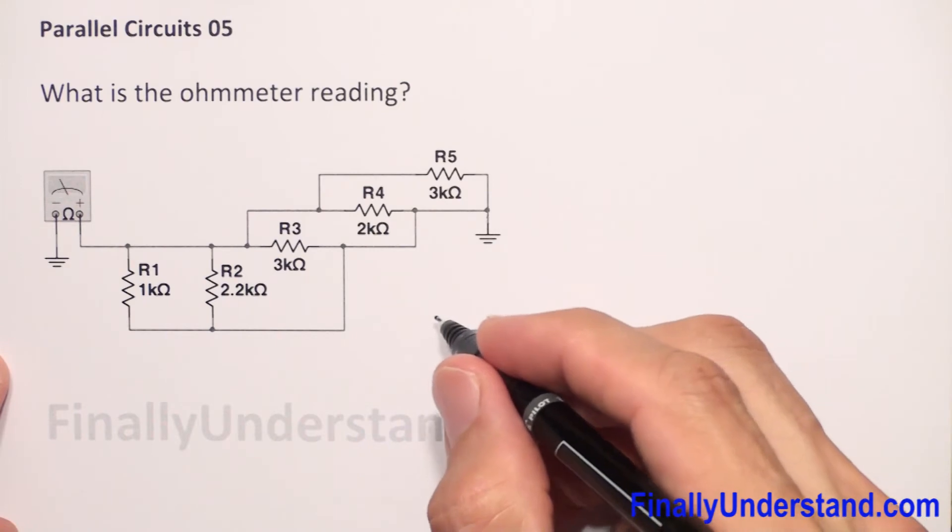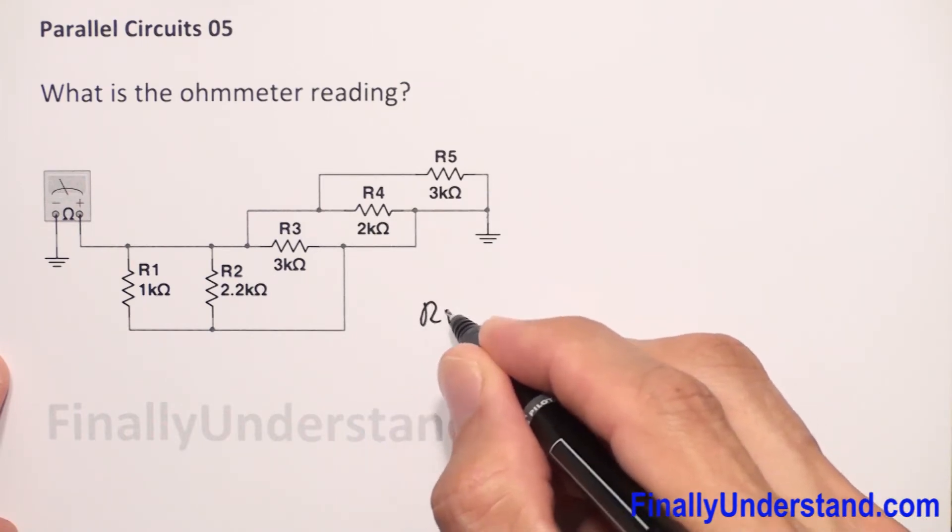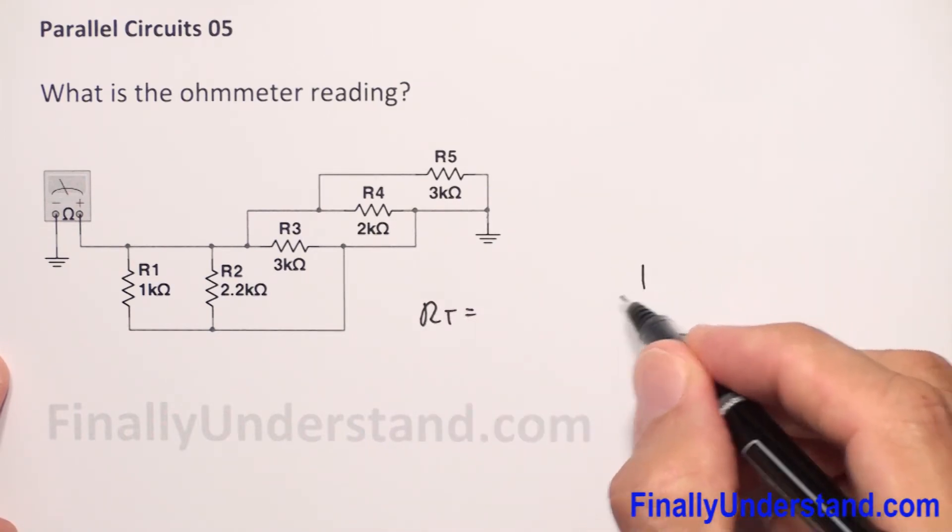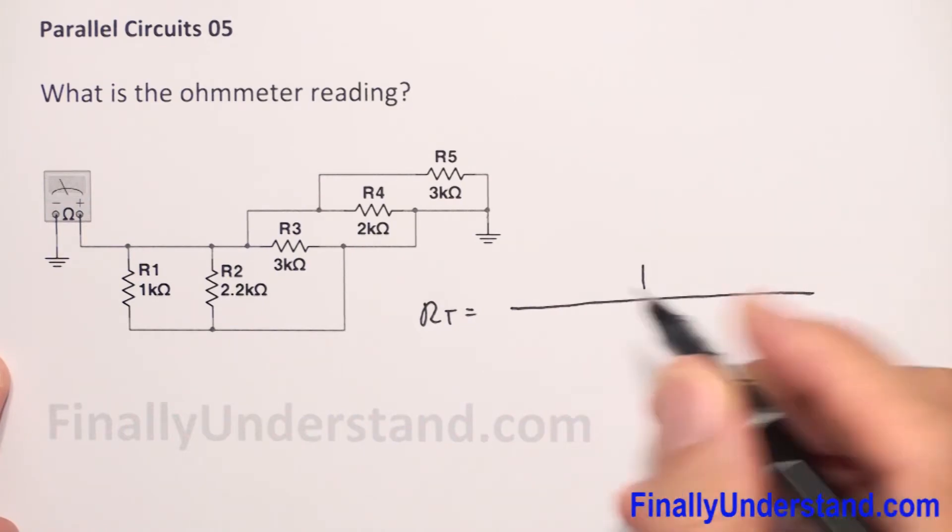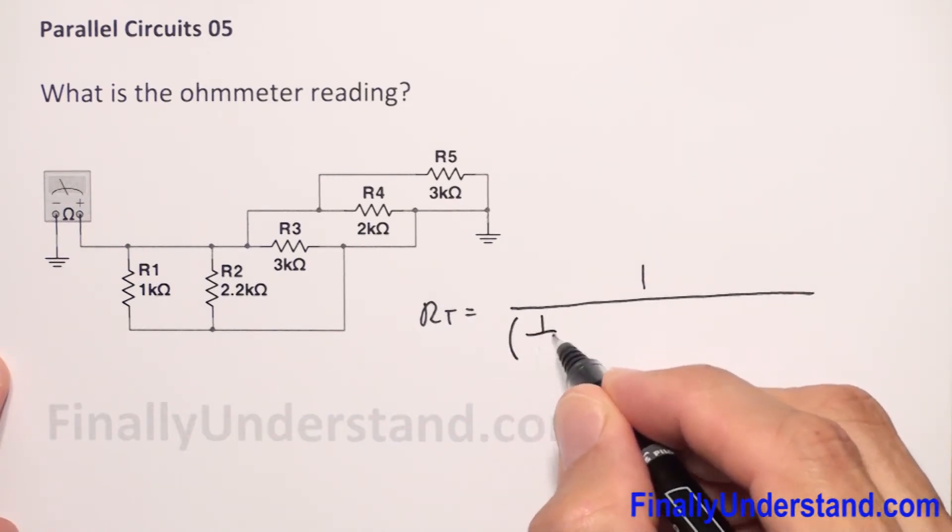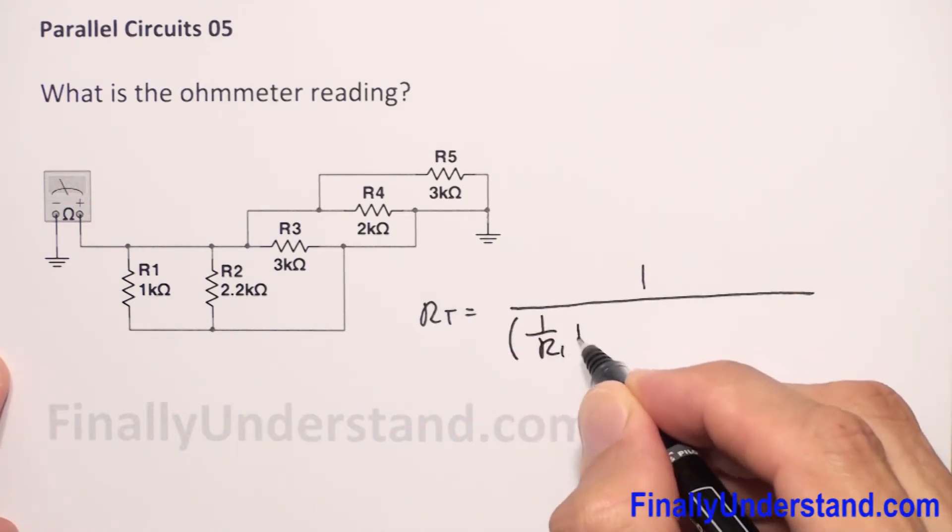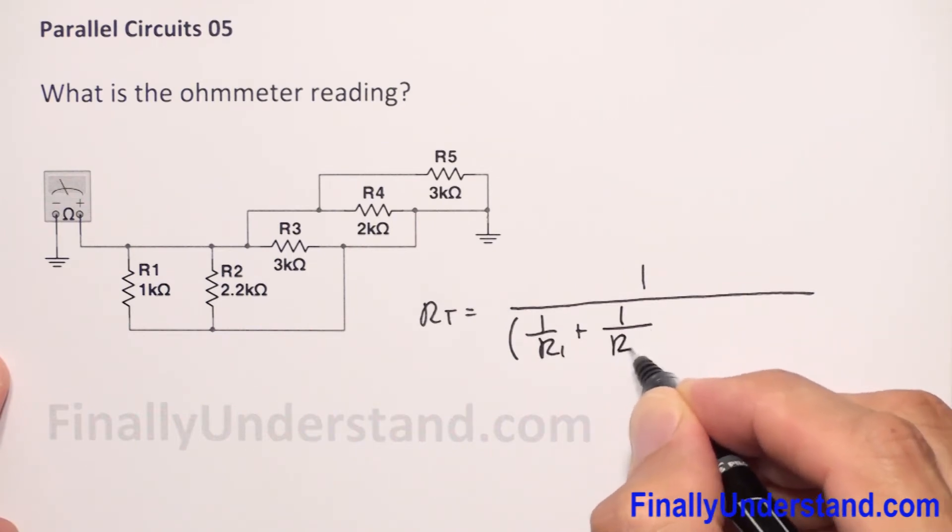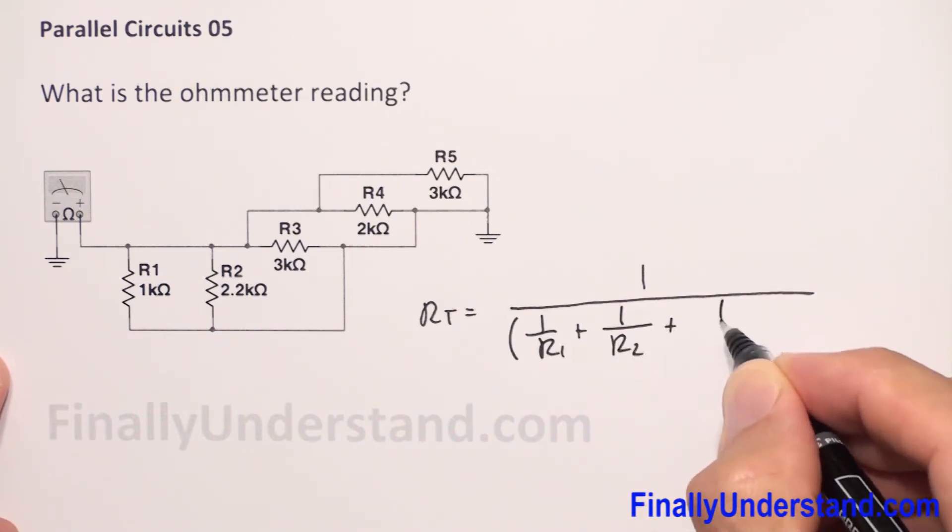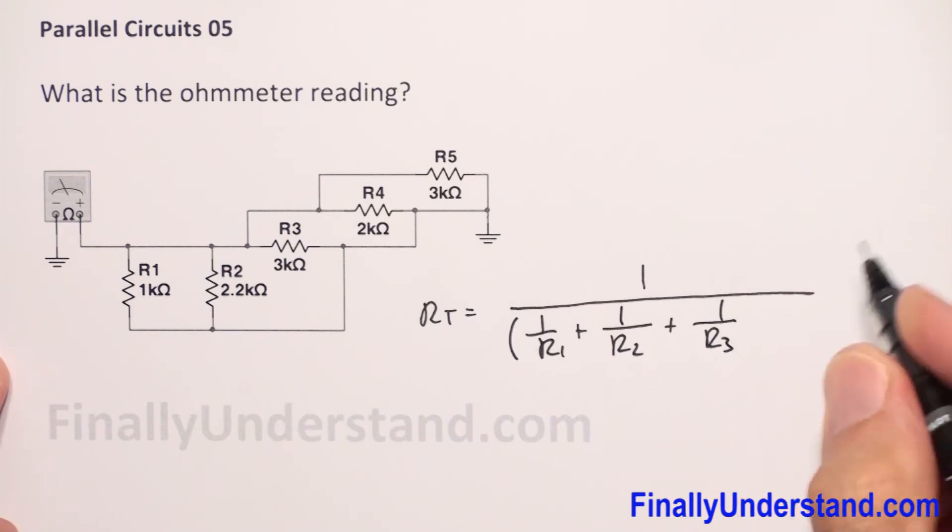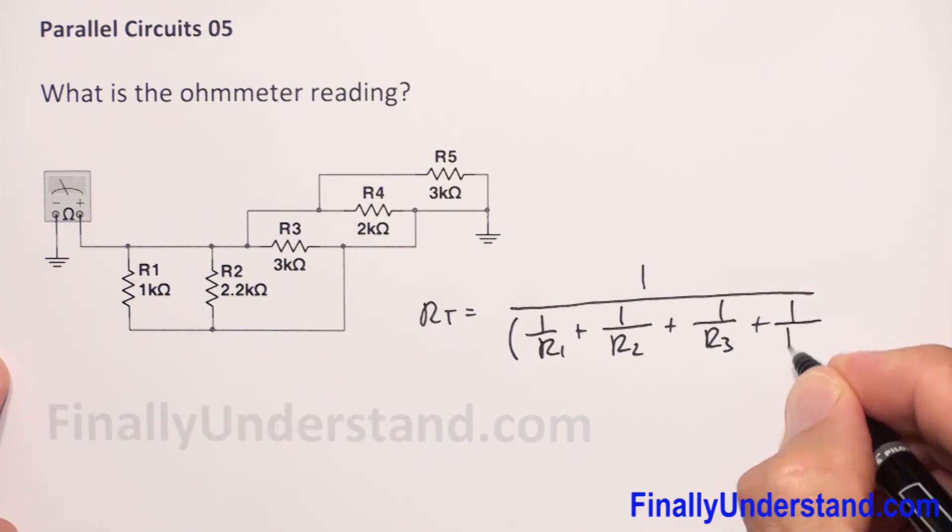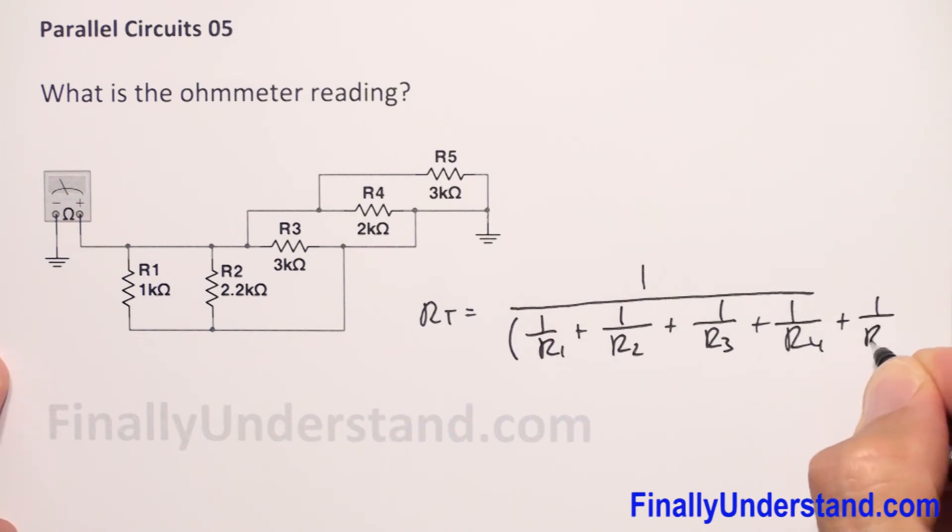So again, I'm going to use the formula. R total equals 1 over open parenthesis: 1 over R1 plus 1 over R2 plus 1 over R3 plus 1 over R4 plus 1 over R5.